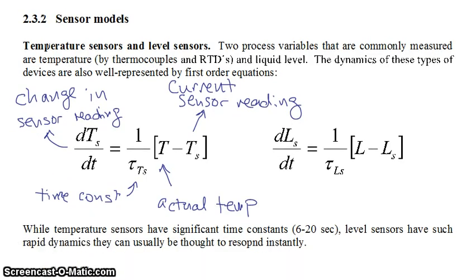Temperature sensors typically have somewhat longer time constants than actuators because it takes time for the sensor to warm up or cool off when embedded in a changing stream. Level sensors, on the other hand, are very rapid and their dynamics can often be ignored.